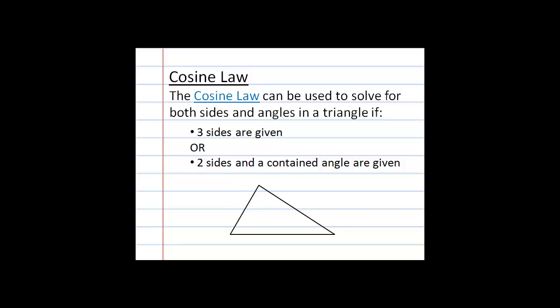If I have a triangle, we're going to label our angles with capital letters. So I have triangle ABC, and the letters A, B, and C are capital letters to indicate the measure of the actual angle in that triangle. We use the opposite side with lowercase letters to indicate the side lengths — across from angle A is side a. So in this triangle, if I'm given two sides A and C, the contained angle is the angle between sides A and C, which is angle B. Similarly, for sides A and B the contained angle is angle C, and for sides B and C the contained angle is angle A.